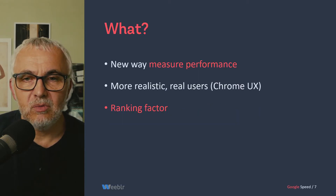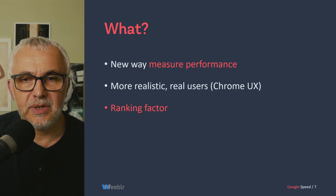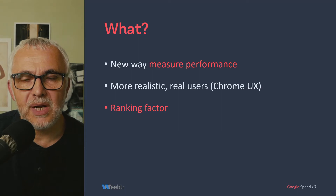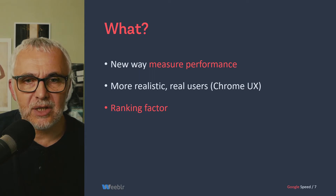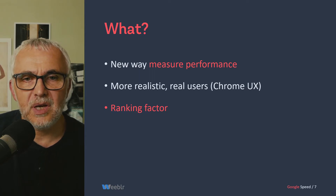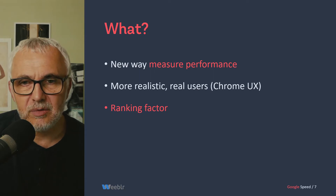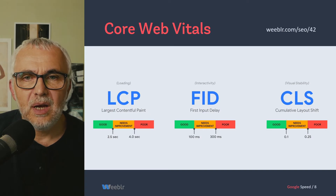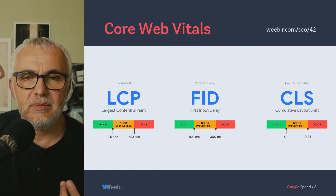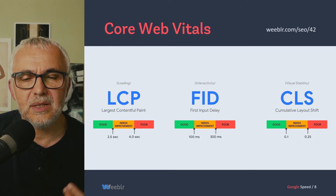So Core Web Vitals — what is that? It's a new way of measuring performance. The key aspect is that it wants to be more realistic, based on the actual speed experience of real users. The Core Web Vitals are today three numbers: LCP, FID, and CLS — largest contentful paint, first input delay, and cumulative layout shift.